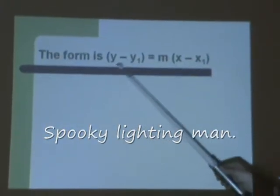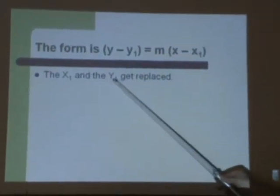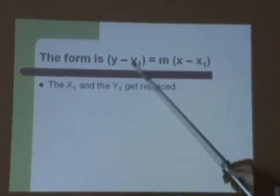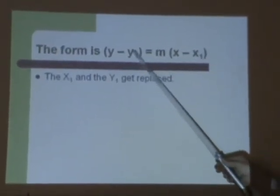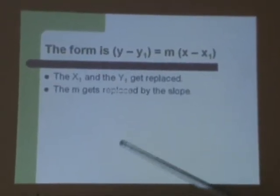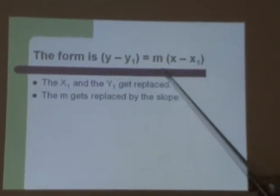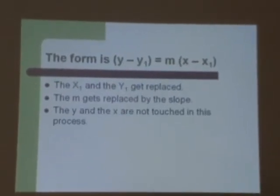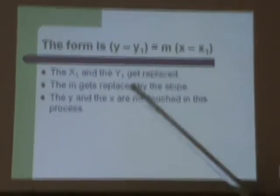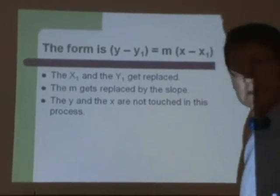We have the format. We have x1 and y1 are going to be replaced. This x1 here is going to go away. y1 here is going to go away. The m is going to get replaced. That's going to go away. Think of a hole being there. But don't think of a hole on this one or this one. The x and y are not touched by this process. They're going to stay in our final equation. They're still going to be there.